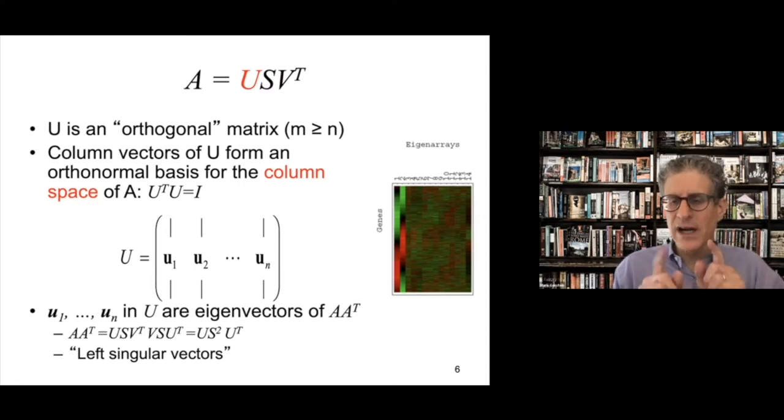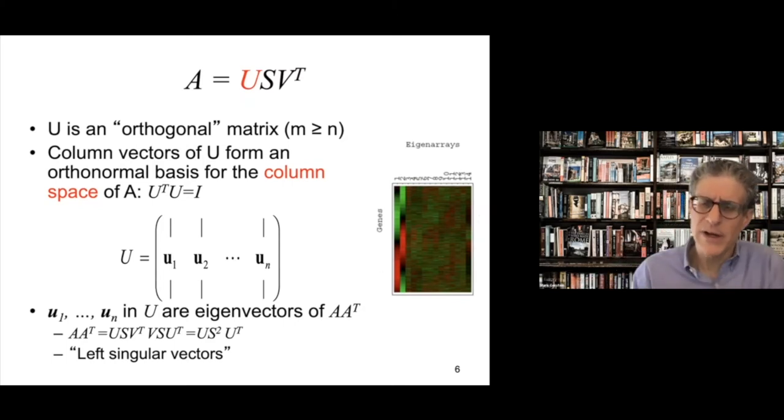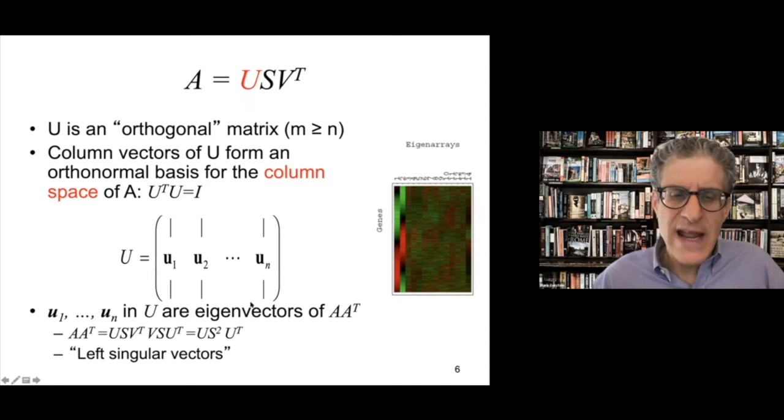The U matrix, remember, is that we have all our genes and then we have these kind of eigenassays. So the column vectors of this are orthonormal and they form a basis and they're kind of arranged so that we have the sort of strongest one and then on down to the weak ones. And these vectors are actually the eigenvectors of the similarity matrix A, A transpose.